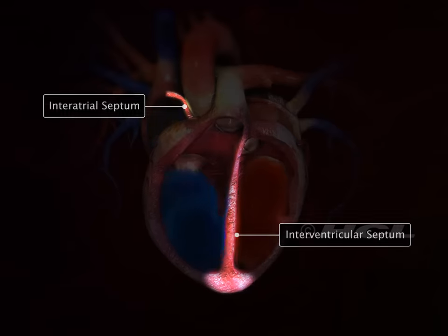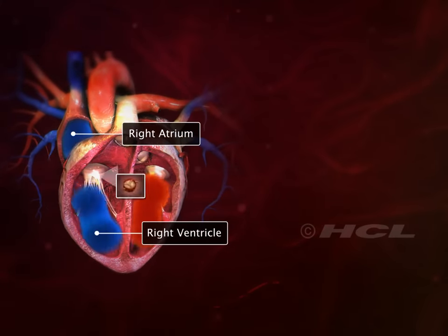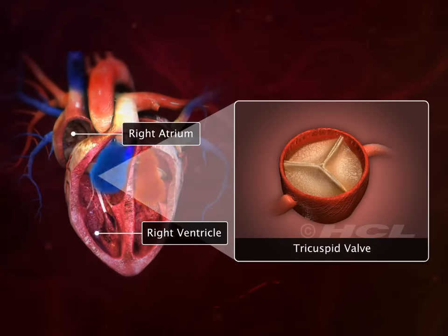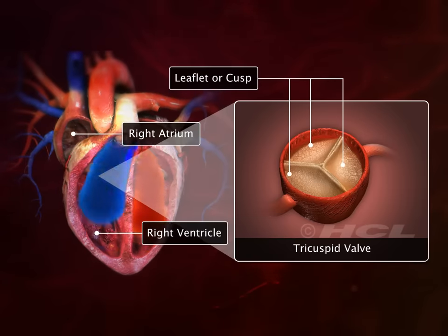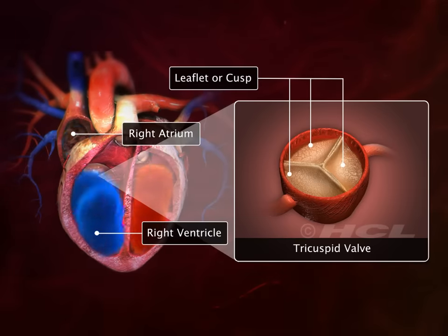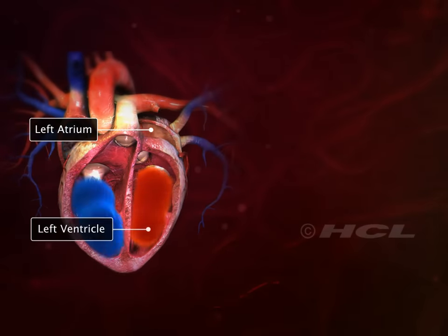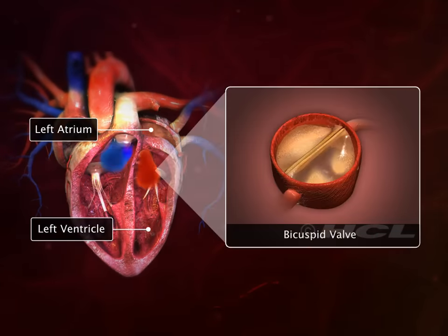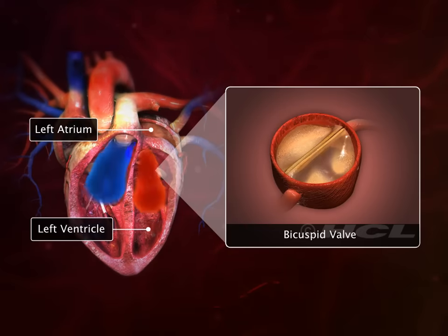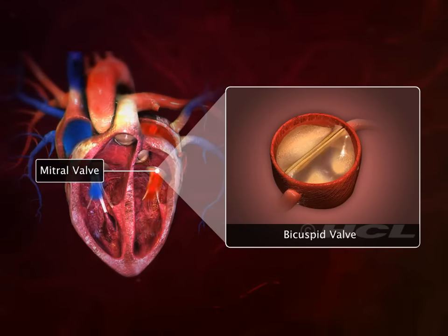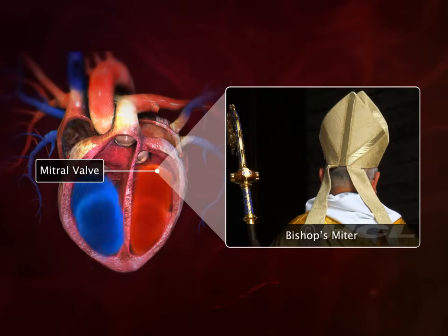The right atrium and right ventricle are connected through a tricuspid valve. As the name suggests, it has three leaflets or cusps. On the other side, the left atrium and ventricle are connected through a bicuspid valve, also called the mitral valve because of its resemblance to a bishop's two-sided mitre or hat.